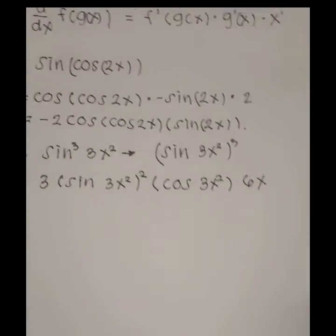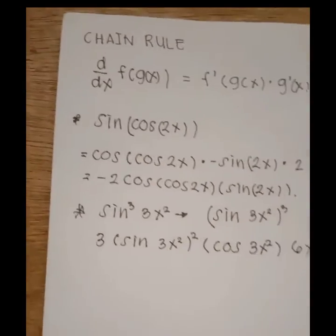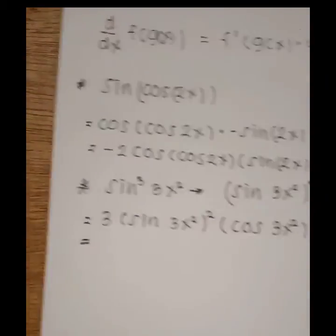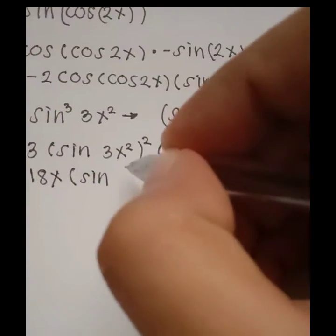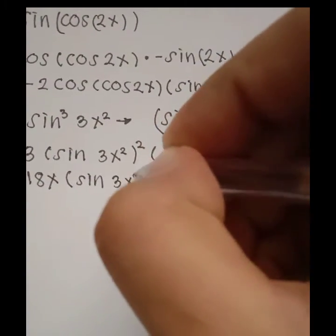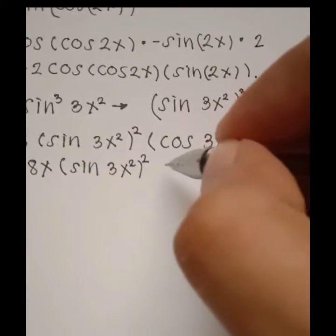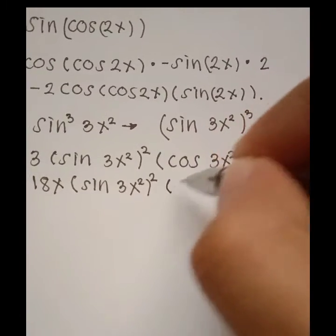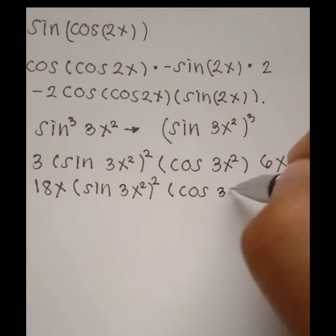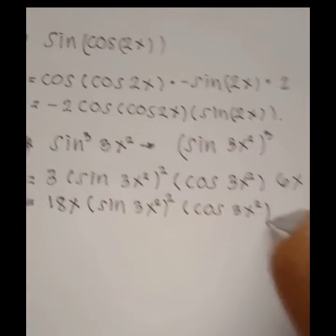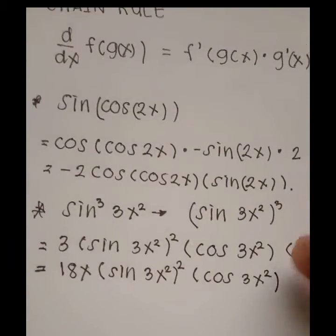The derivative of 3x² is 6x. To simplify, we have 6x times 3 which is 18x, giving us the final answer: 18x · sin²(3x²) · cosine(3x²).